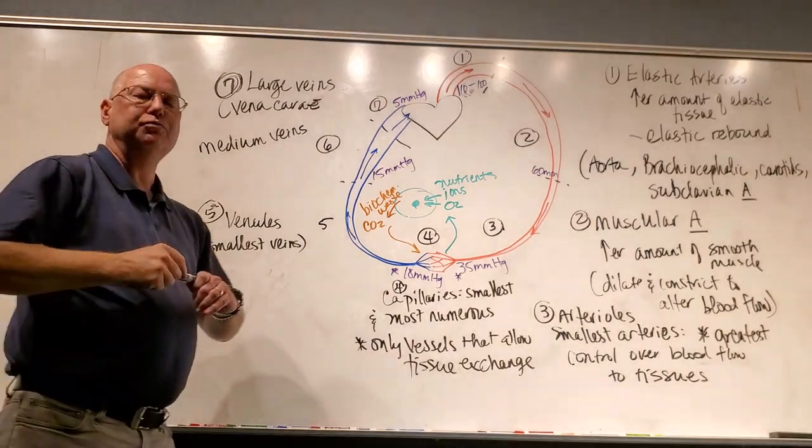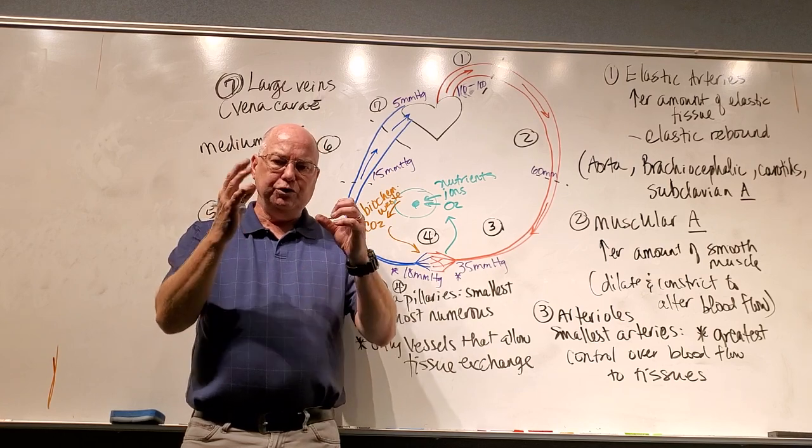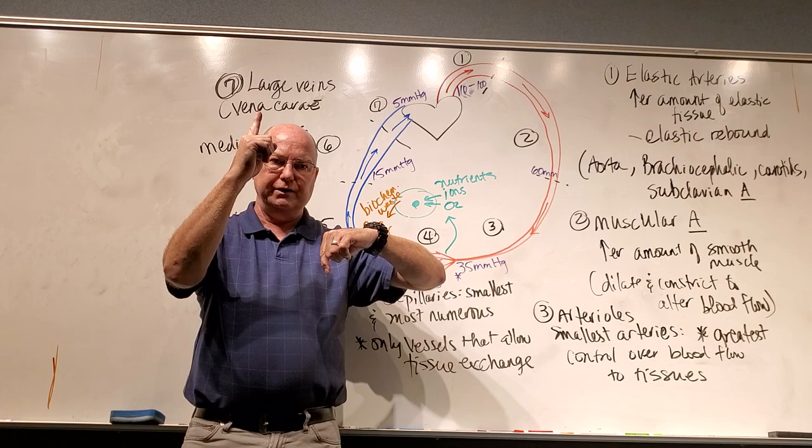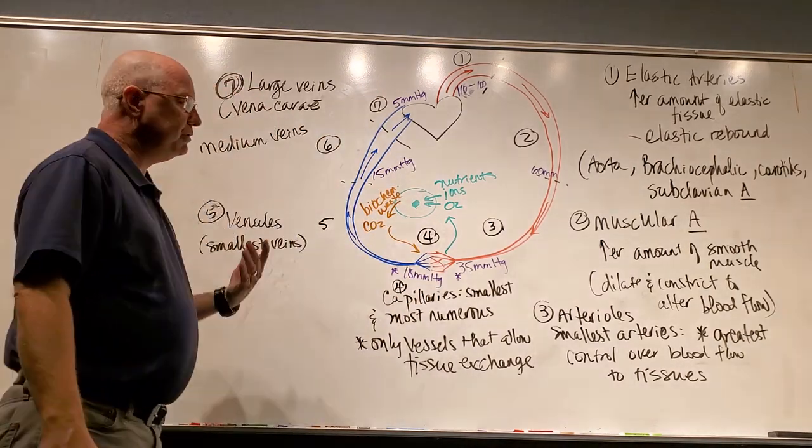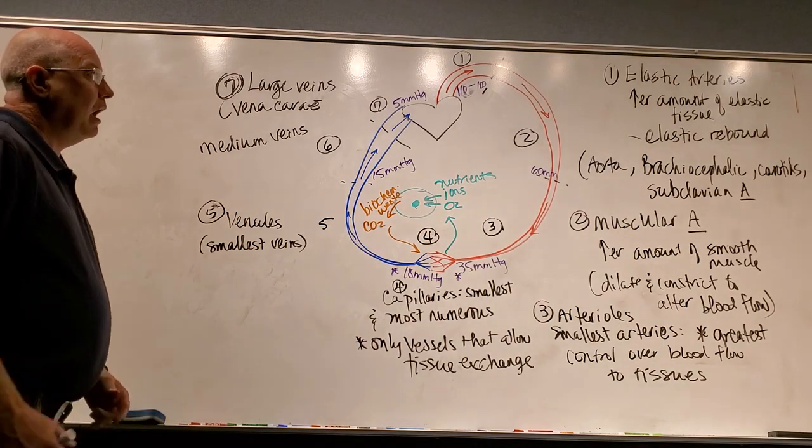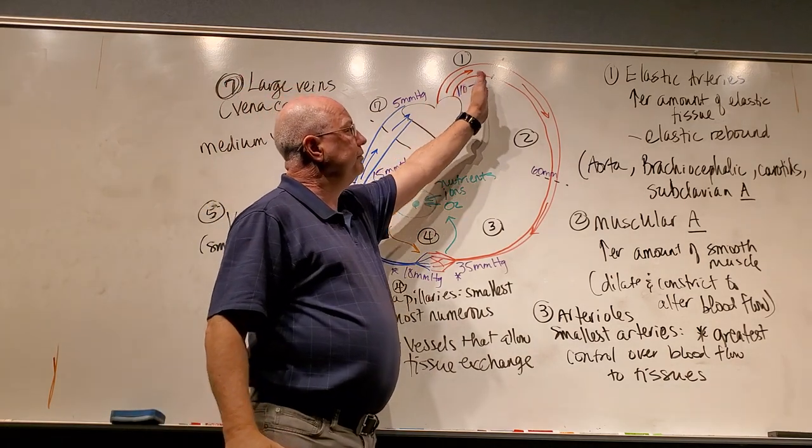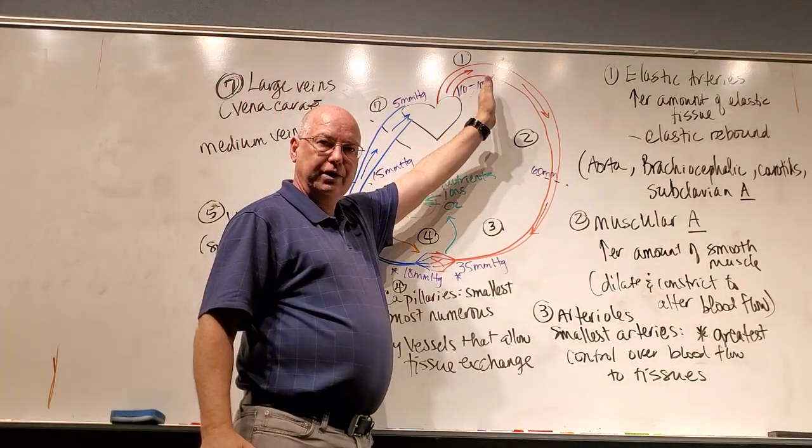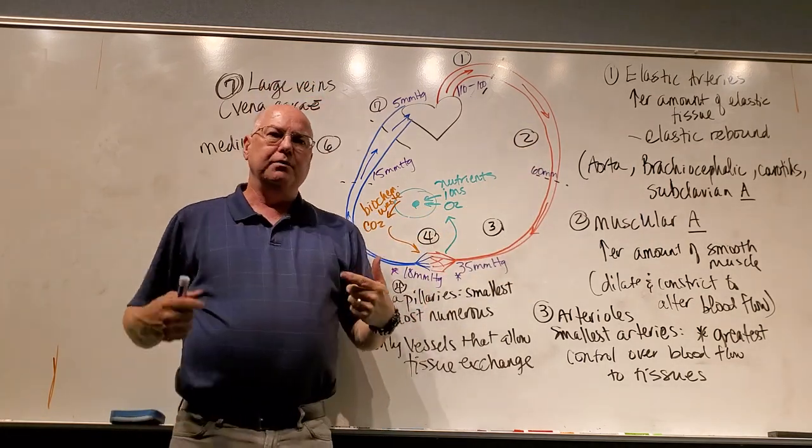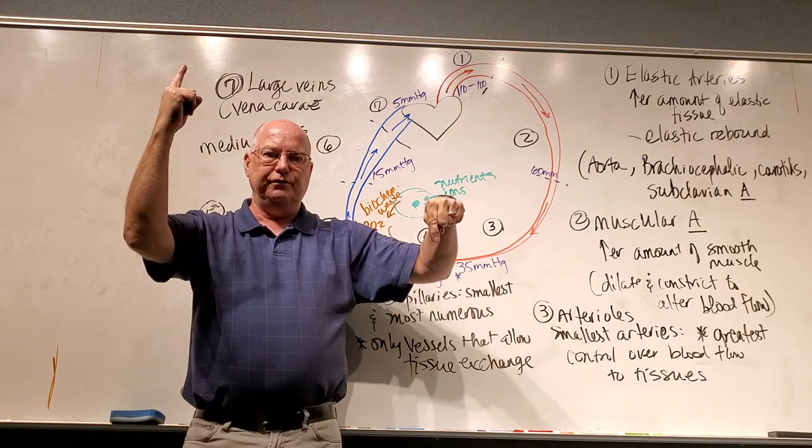For those of you that don't know, millimeters of mercury, they use mercury, the silver metal, it's a liquid at room temperature. When you put it in a tube, if I put pressure on one end of the tube, the mercury will rise, and it rises a number of millimeters. So we talk about millimeters of mercury, we talk about pressure. I really don't want you to memorize these numbers. What I'd like for you to realize is that the further away I go from the aorta, or the further I go downstream here, the lower the pressure becomes.